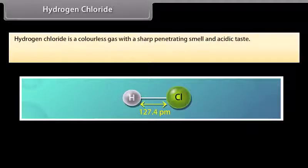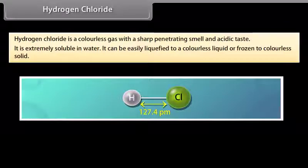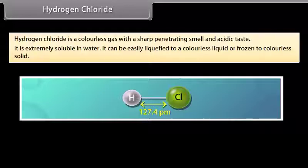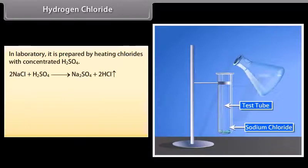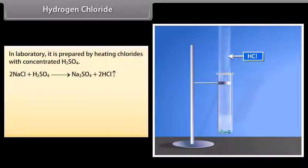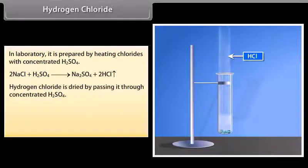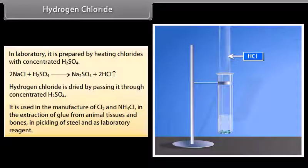Hydrogen chloride: In 1648, Glauber obtained hydrogen chloride by heating common salt with concentrated sulfuric acid. It is a colorless gas with a sharp penetrating smell and acidic taste. It is extremely soluble in water — one volume of water dissolves about 450 volumes of hydrogen chloride under ordinary conditions. It can be easily liquefied to a colorless liquid or frozen to a colorless solid. In the laboratory, it is prepared by heating chlorides with concentrated H₂SO₄ and dried by passing through concentrated H₂SO₄. It is used in the manufacture of Cl₂ and NH₄Cl, in extraction of glue from animal tissues and bones, in pickling of steel, and as a laboratory reagent.